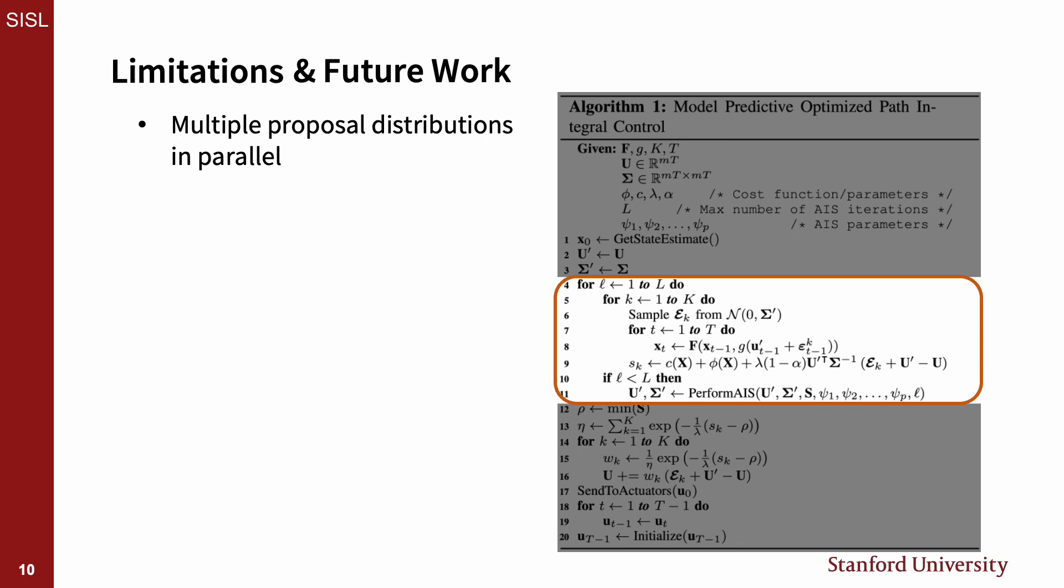A way to get full parallelization back while still using AIS techniques would be to integrate these AIS algorithms where you can propagate the system dynamics of the samples from each proposal distribution in parallel.